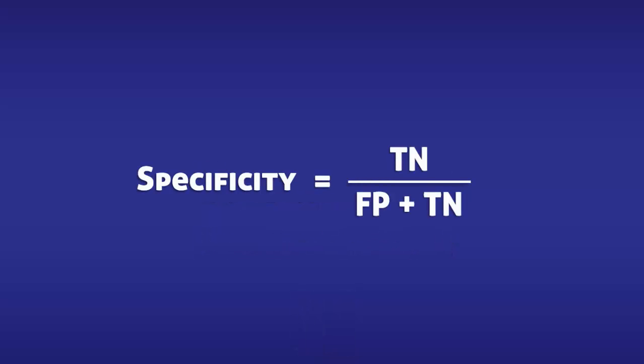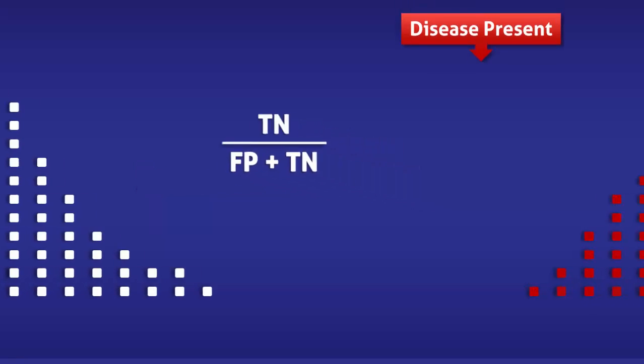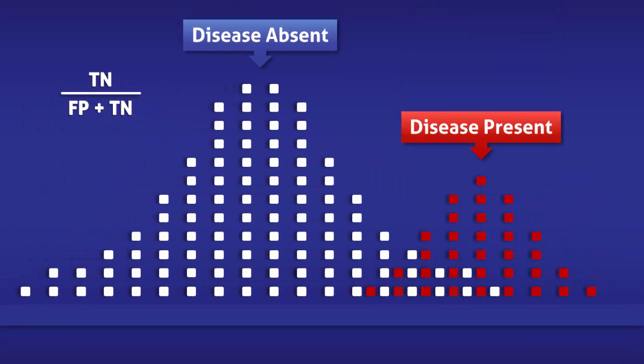Specificity is calculated by dividing the number of true negatives by the total number of people without the condition. To help us understand this equation, we are going to imagine that a group of people are being tested for a disease.